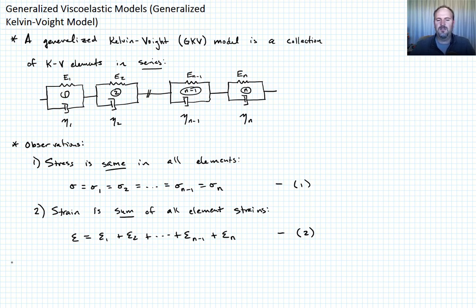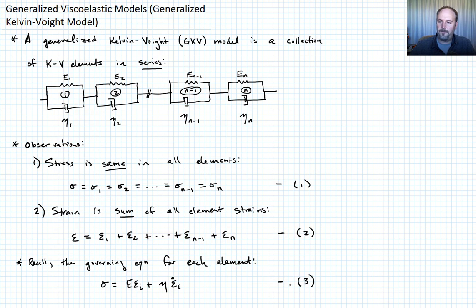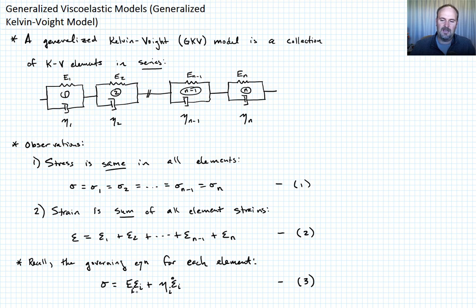I want to remind you of the governing equation for each element. We already derived this: the governing equation for each element is sigma equals e_i times epsilon_i plus eta_i times epsilon_i dot. Call that equation three. Since the stress is the same in all elements we don't need to subscript it, but the strains and the material constants e and eta can be different. The subscript i just identifies the element number — there's no Einstein summation implied.